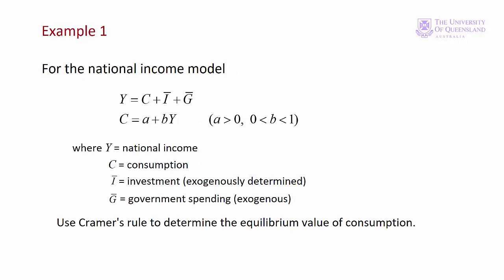In this example we have a very simple macroeconomic model. Y is national income, usually measured as GDP. It's a function of consumption by households, plus investment by business, plus government expenditure. Consumption is a function of income: A is an intercept term, and b is the proportion of income spent on consumption — the marginal propensity to consume. In the tutorial we extend the model by including taxation, making consumption a function of disposable income, and investment a function of interest rates, so interest rates become an exogenous variable that includes monetary policy. This is a closed economy, though we could add exports, imports, and exchange rates.